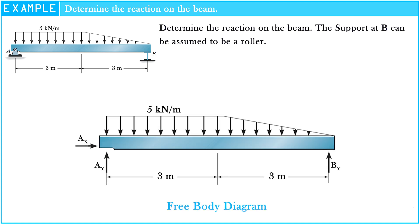We see that at support A, there are 2 unknowns, AX and AY, and support B that we assume to be a roller has 1 unknown, BY.